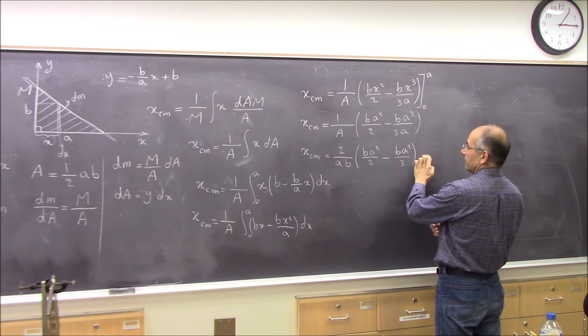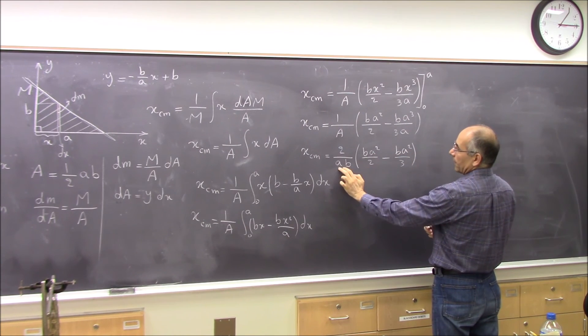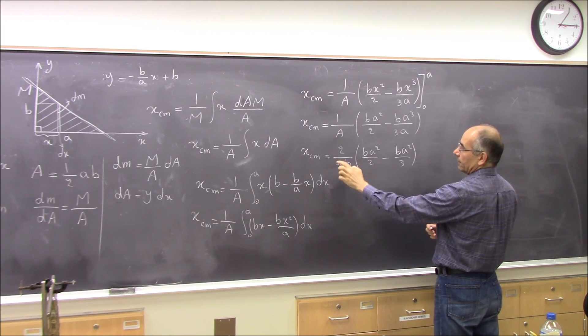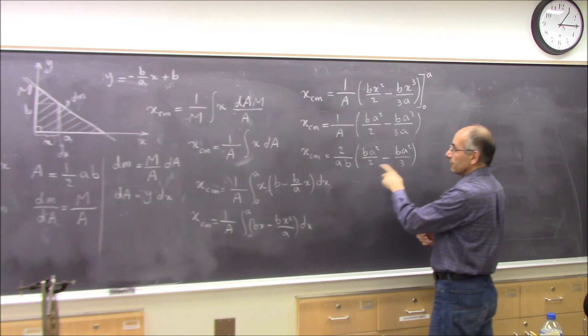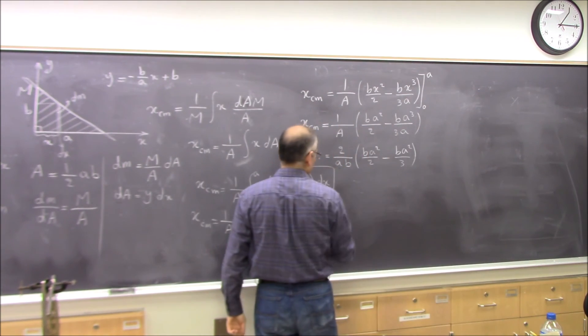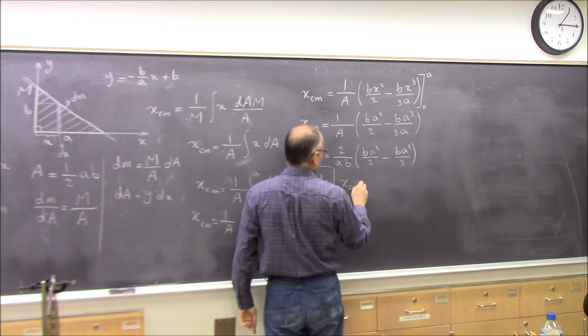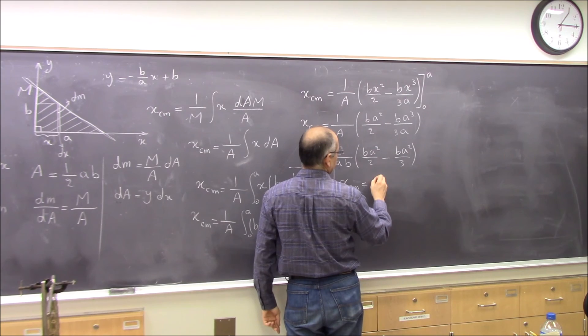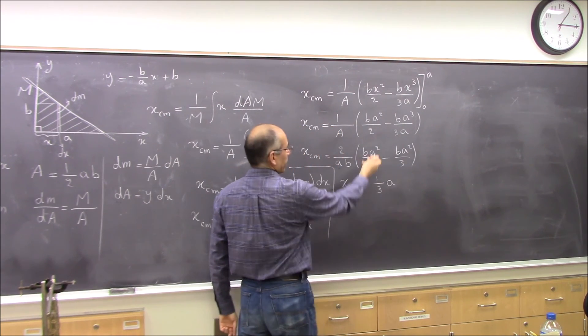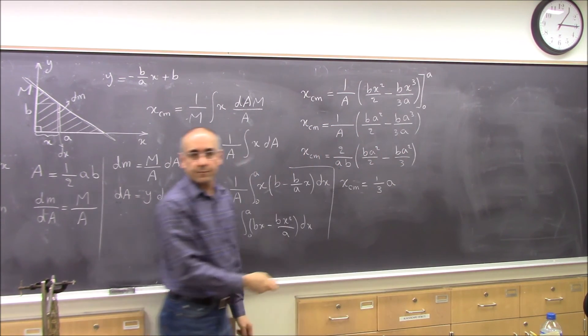The other one cancels out, you get a factor of a, and 1 minus 2 thirds. So you get x of center of mass equal to 1 third of a, because you get 1 minus 2 thirds.